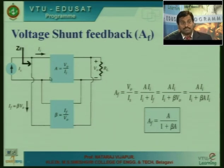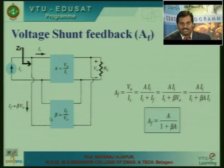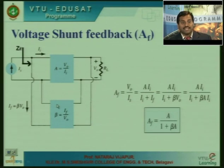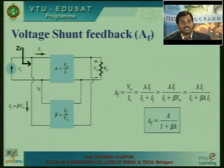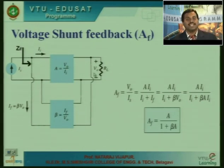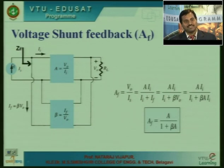Recall that any closed loop amplifier consists of an amplifier with open loop gain A and a feedback network with gain beta. The aim is to control the gain and improve the impedances. The input voltage source is represented as a current source of magnitude i_s. The feedback network receives the output voltage and generates a feedback current, which subtracts from the source current to give input current i_i. The amplifier amplifies this input current and generates output voltage V_naught applied to the load.